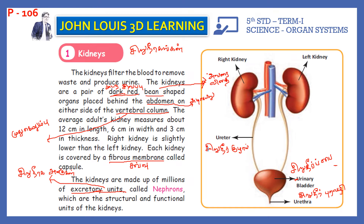The kidneys filter the blood to remove waste and produce urine.